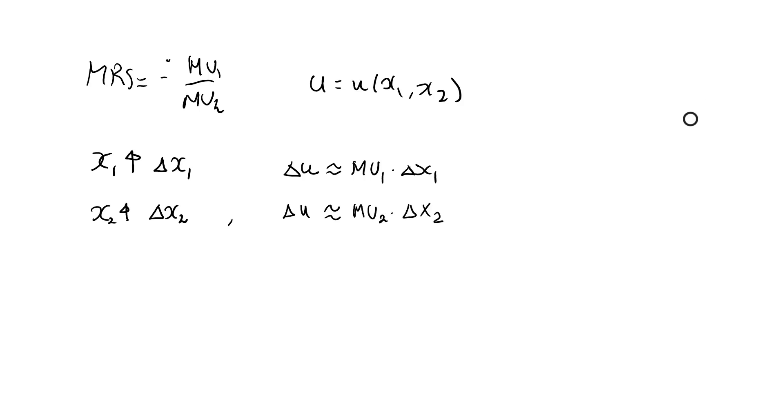So what if I increase x1 by delta x1 and I increase x2 by delta x2? Well, then the increase in utility will be approximately mu1 times delta x1, the increase in utility from increasing consumption of good one,